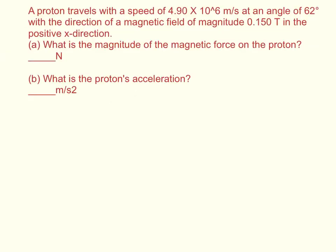A proton travels with a speed of 4.9 times 10 to the 6 meters per second at an angle of 62 degrees with the direction of a magnetic field of magnitude 0.15 tesla in the positive x direction. What is the magnitude of the magnetic force on the proton?